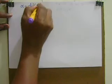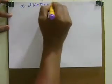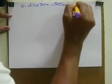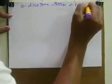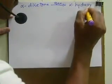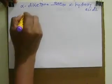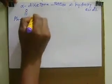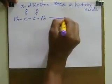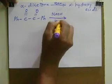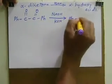In benzylic acid rearrangement, the statement is: alpha diketones are converted via a base-catalyzed rearrangement into alpha hydroxy acid or salt of alpha hydroxy acids. For example, the structure of benzyl — Ph-C(=O)-C(=O) — in presence of a base like NaOH or KOH, is converted into benzylic acid.